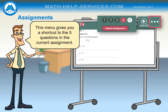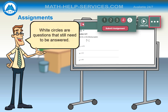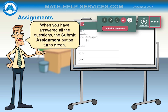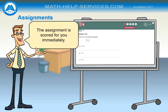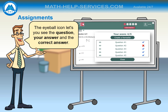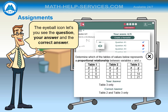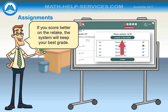This menu gives you a shortcut to the five questions in the current assignment. Green circles are questions that have been answered, the question you are on is red, and white circles are questions that still need to be answered. When you have answered all the questions, the Submit Assignment button turns green. After carefully reviewing your answers, click on Submit Assignment. The assignment is scored for you immediately. The eyeball icon lets you see the question, your answer, and the correct answer. From this screen, you can create a remedial — this is a retake with different questions. If you score better on the retake, the system will keep the best grade.